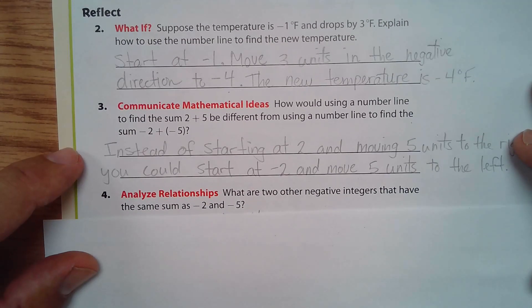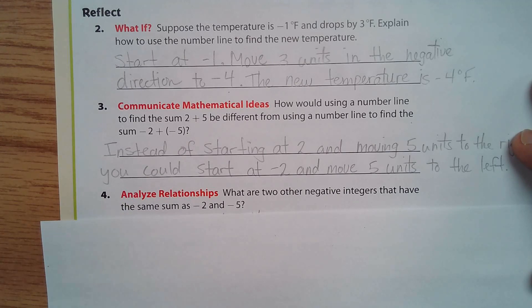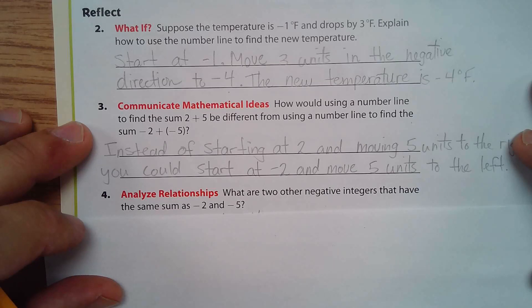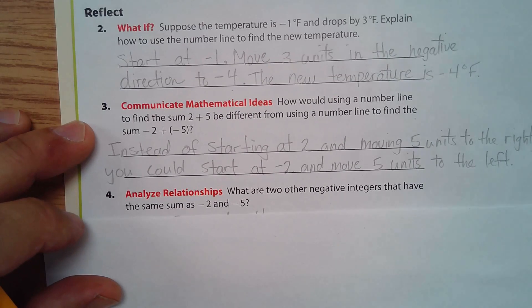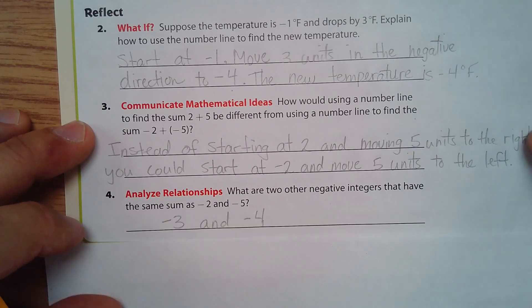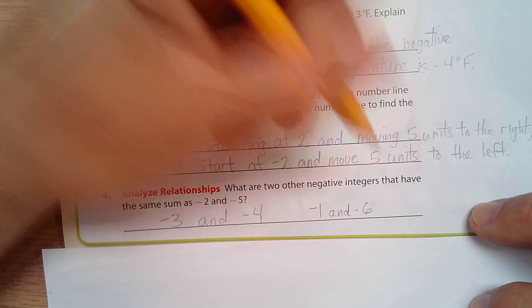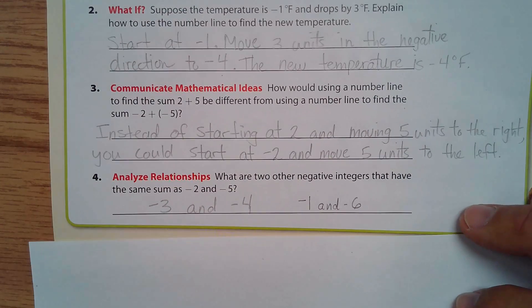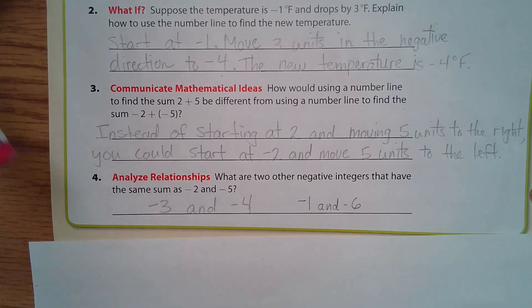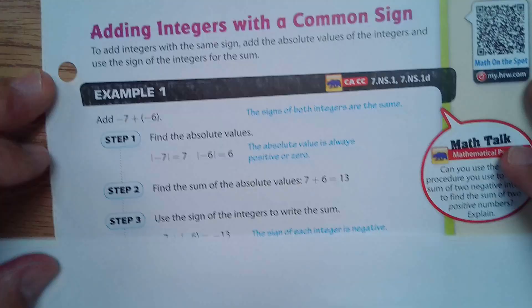What are two other negative integers that have the same sum as negative two plus negative five? Negative two and negative five add to negative seven, so we need any two other numbers that also add to negative seven. One example is negative three and negative four. Another is negative one and negative six.